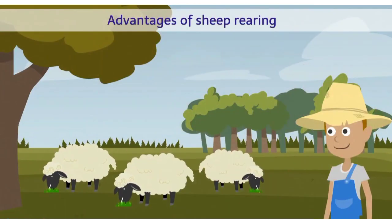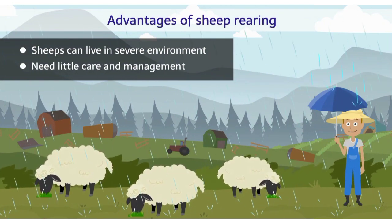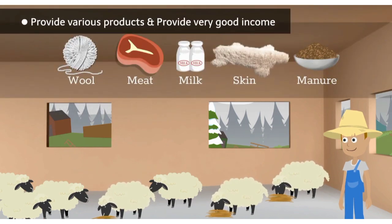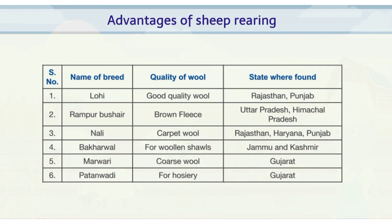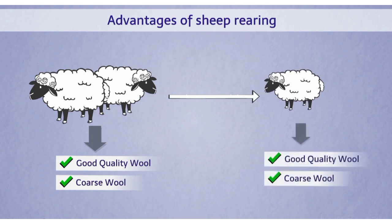The advantages of sheep rearing are: sheep are very strong animals that can live in severe environments and need only a little care and management. They need little space for living and provide various products, giving very good income. They also help farmers by eating unwanted plants in farms. If you select parents having special characteristics, it is possible to produce offspring with the same characteristics - this is known as selective breeding. With selective breeding, it is possible to produce sheep that give good quality wool.